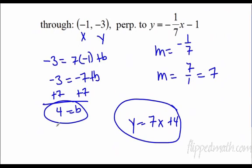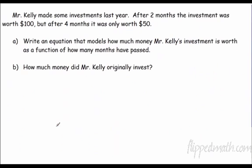And let's try a word problem here. Mr. Kelly made some investments last year. After 2 months, the investment was worth $100. After 4 months, it was $50. So, we need some points. 2 months, $100. 4 months, $50. We need an equation that models how much Mr. Kelly had. So let's find our slope.